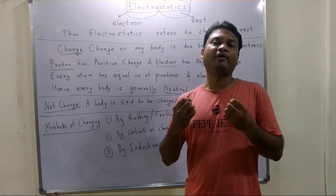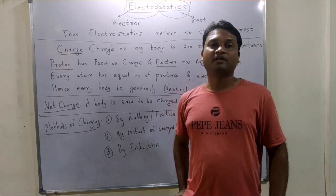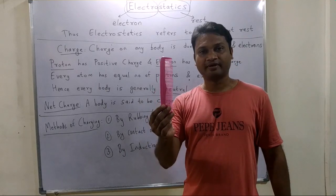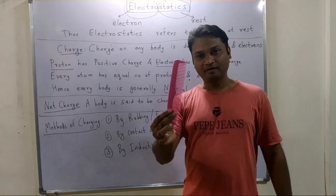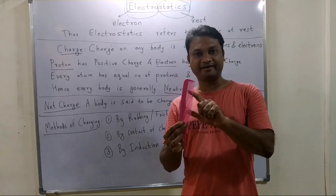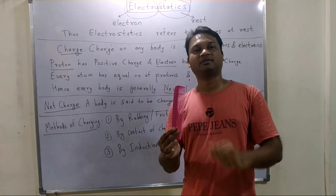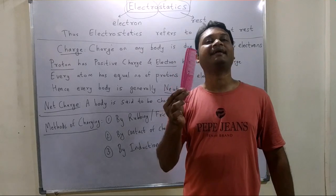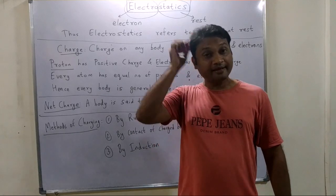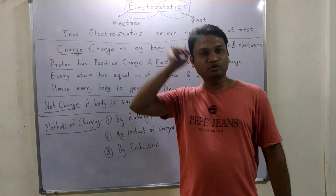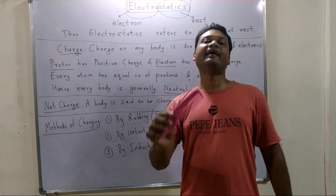How do we charge a body? For example, if I take this comb — does it have any charge? No, it is neutral, because every atom in it has an equal number of protons and electrons. So how can I charge it? By combing. If I comb my hair using the comb, it will get charged.